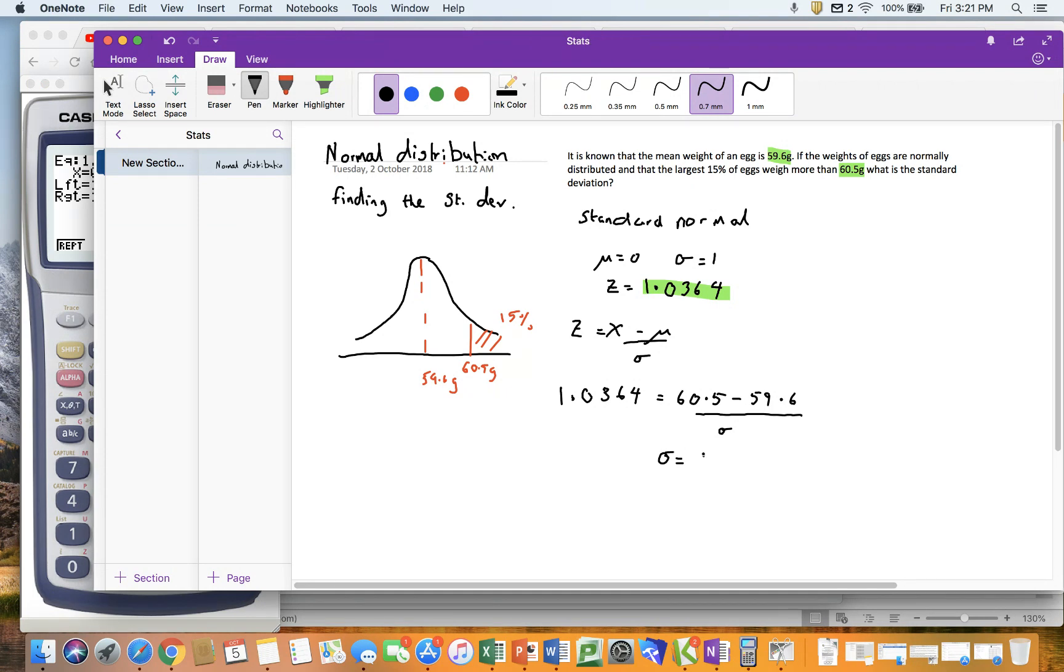So sigma is 0.8668 grams, or 0.87 grams, because let's be honest, I don't know how good you are at weighing, but I doubt I could weigh 0.8668 of a gram.